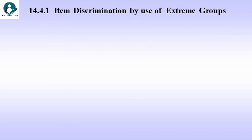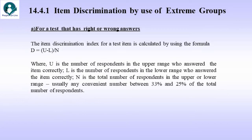And this is for a test that has right or wrong answers. The Item Discrimination Index for a test item is calculated by using the formula d equals u minus l by n, where u is the number of respondents in the upper range who answered the item correctly, l is the number of respondents in the lower range who answered the item correctly, and n is the total number of respondents in the upper or lower range. Usually, any convenient number between 33% and 25% of the total number of respondents.